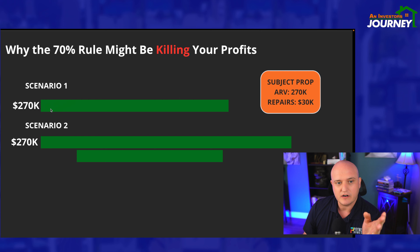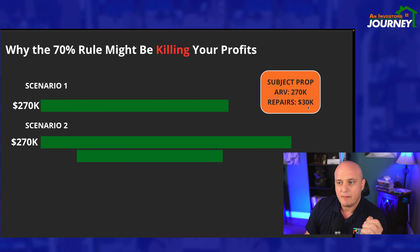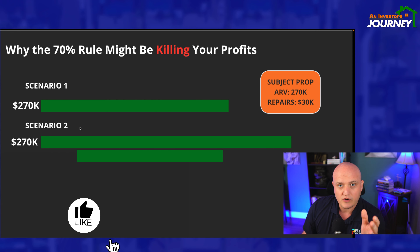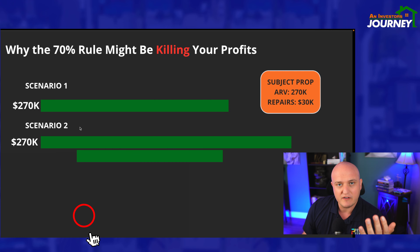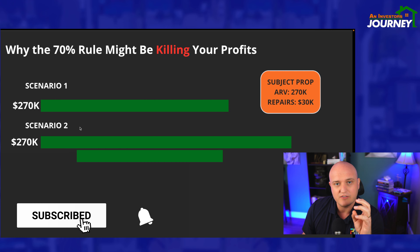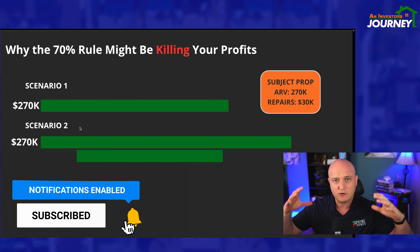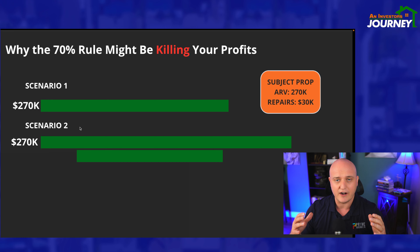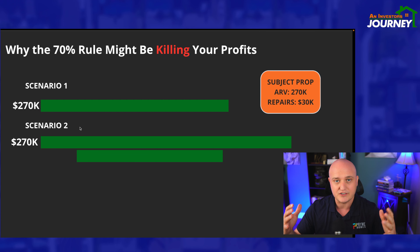All right, so I have two scenarios here. ARV: $270K, repairs: $30,000. This is the subject property we're going to be analyzing in both scenarios. ARV, if you don't know, stands for after repair value — the value of the house if you were to take it down, do all the bells and whistles required, and sell it in the market for the full price that the market requires.